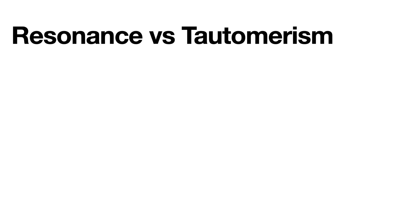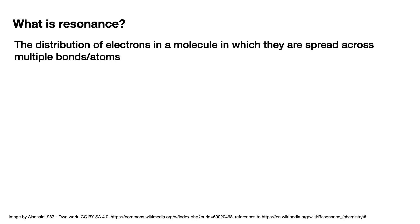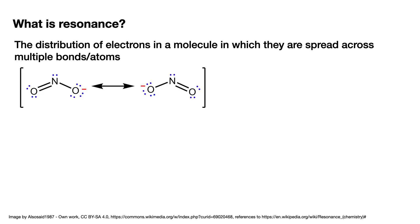Let's talk about resonance versus tautomerism. Resonance is the distribution of electrons in a molecule in which they're spread across multiple bonds or atoms. As you can see right here, we have two structures of the NO2 ion, and we have a movement of electrons.